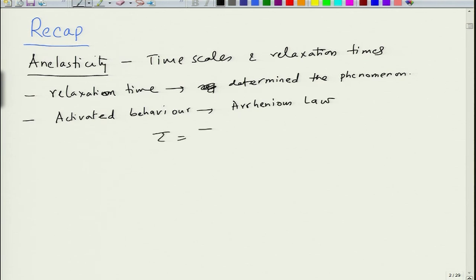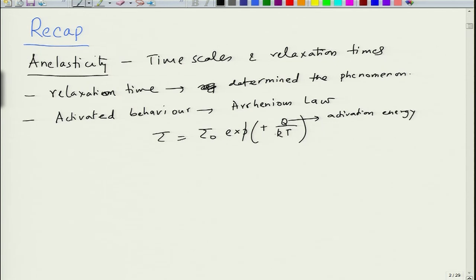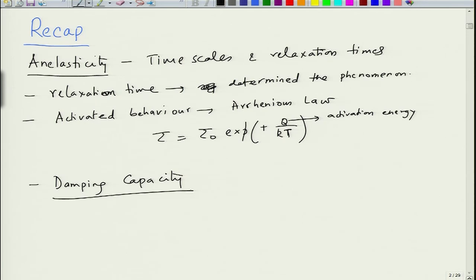Basically, the relaxation time is related to energy as exponential of Q divided by kT. Higher the activation energy, more the time you require for diffusion to occur, or lower the temperature, more is the time required. Another term we described was damping capacity, which is basically determined by the ability of materials to dissipate energy when subjected to cyclic stress, and this can happen through various internal processes inside the material.